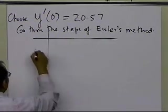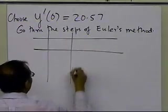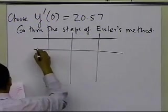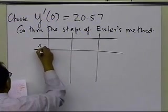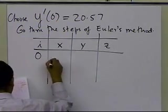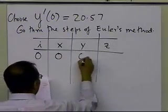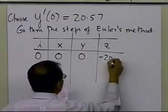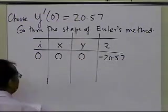So you're going to go through the steps of Euler's method, and this is what you're going to obtain for different values of x, different values of y and z. So it's i, this is x, this is y, this is z. So when i is 0, of course x is 0, y is 0, and z is minus 20.57, which is the initial slope.